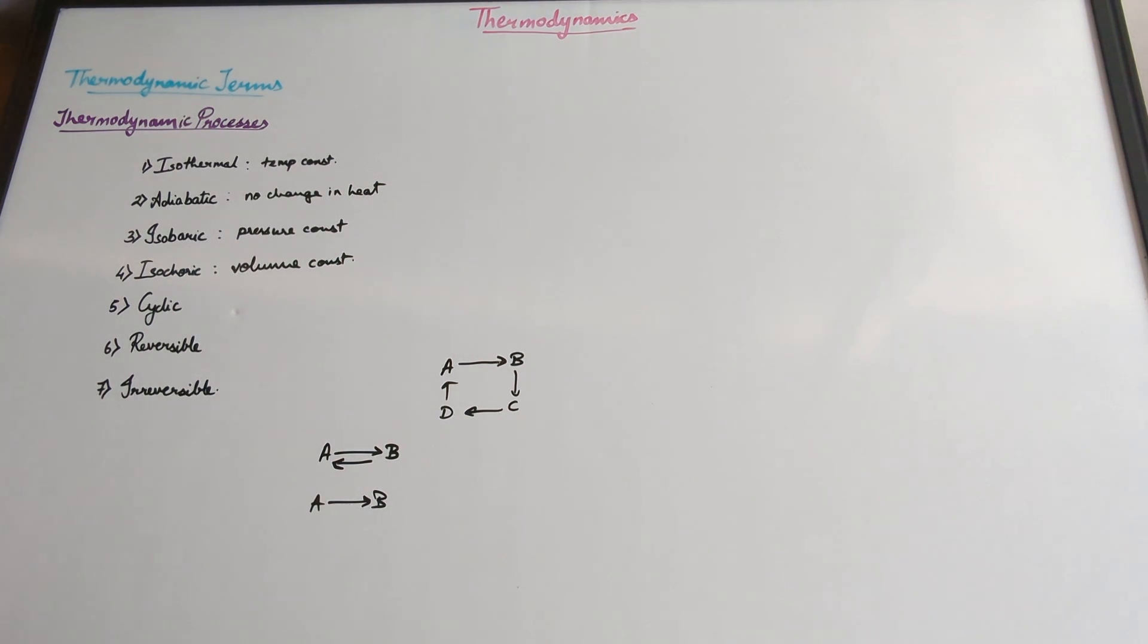So these are the various thermodynamic processes. Isothermal, you have temperature is constant. Adiabatic, there is no heat change or there is no change in heat. So you don't have heat leaving the system or getting into the system. Isobaric is where the pressure stays constant. Isochoric is when volume stays constant.